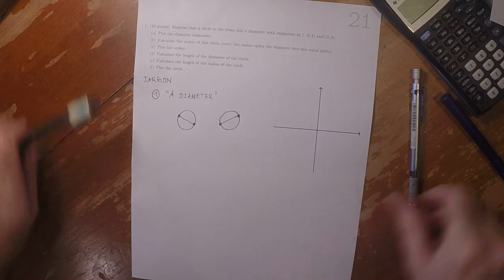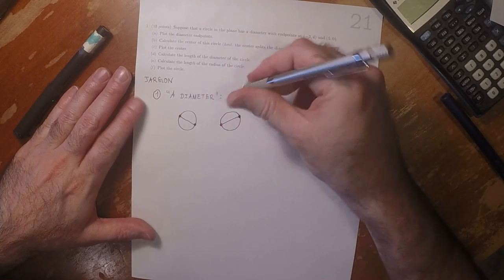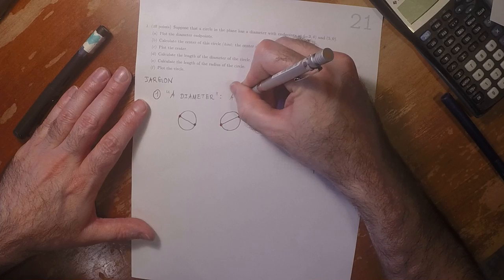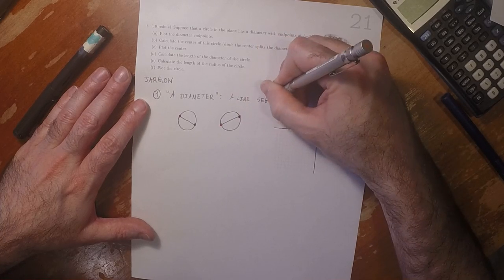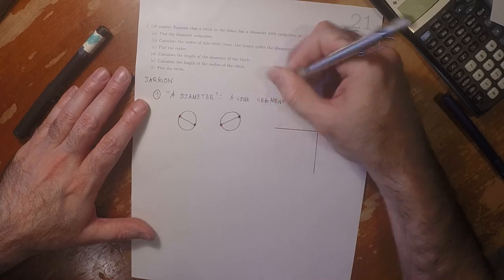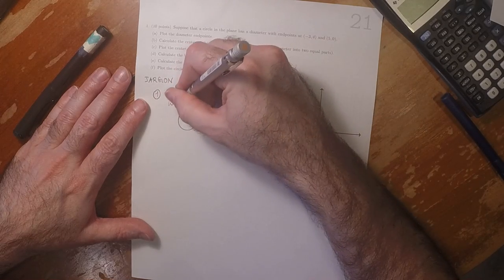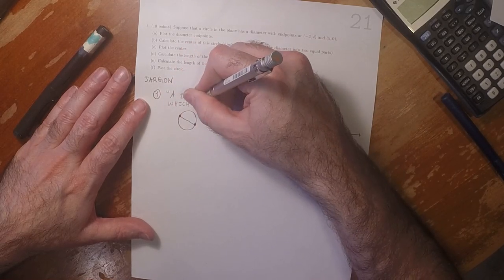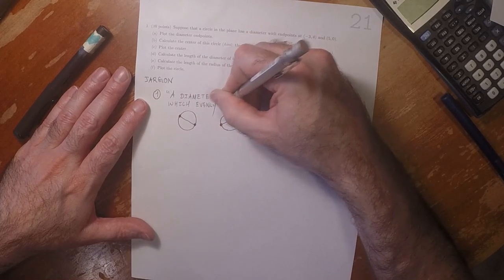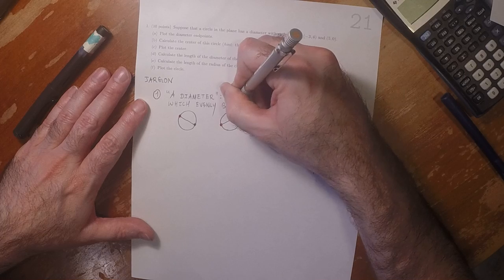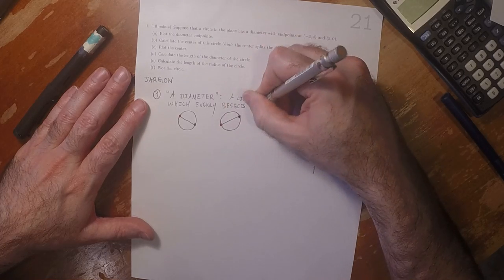So in this usage, a diameter means a line segment which bisects, or I'll say evenly bisects, a circle.